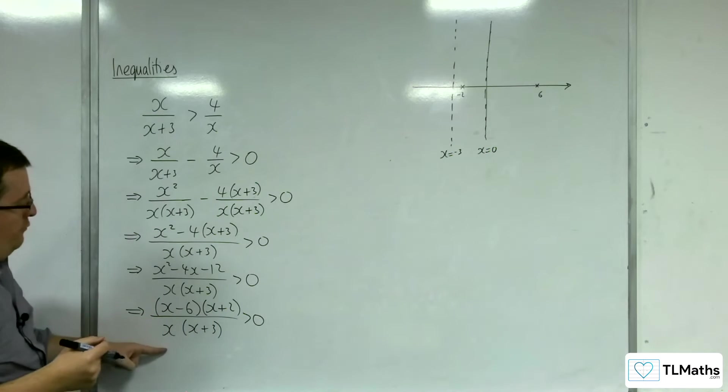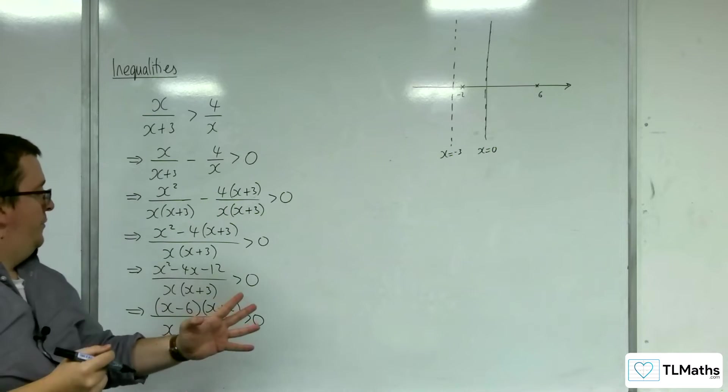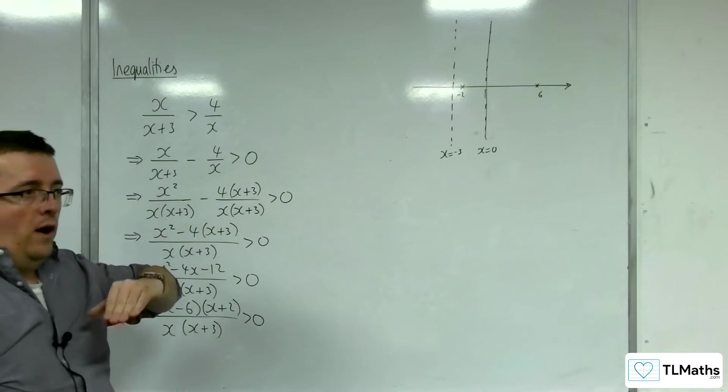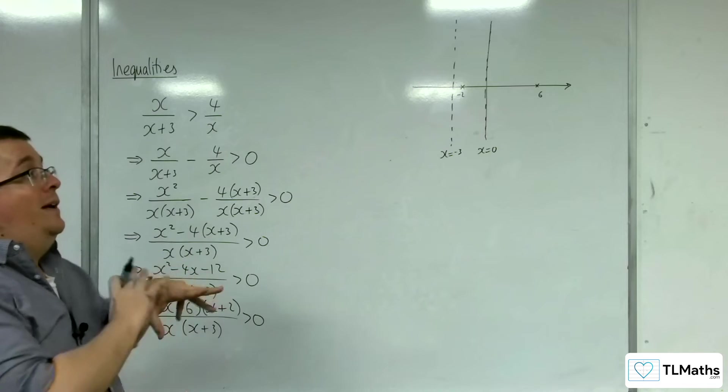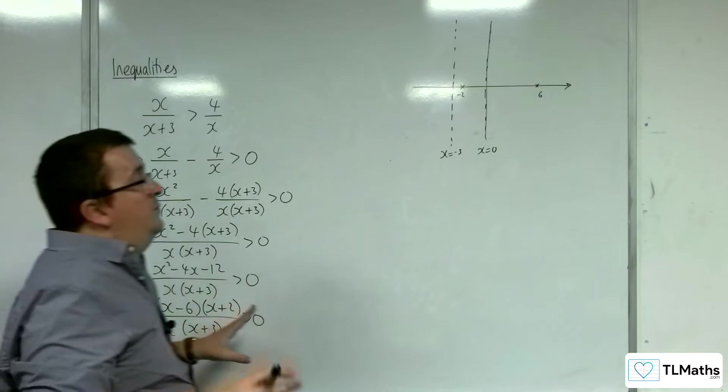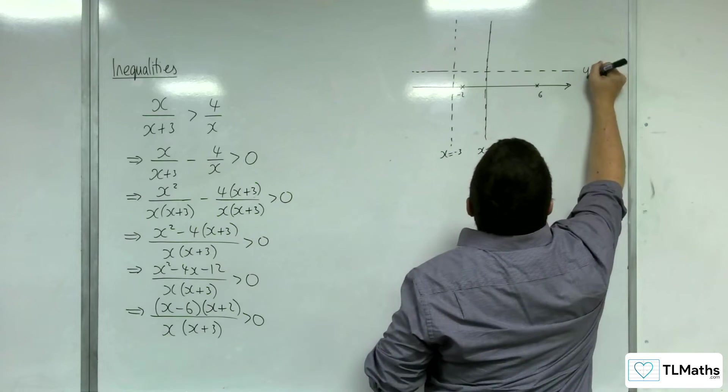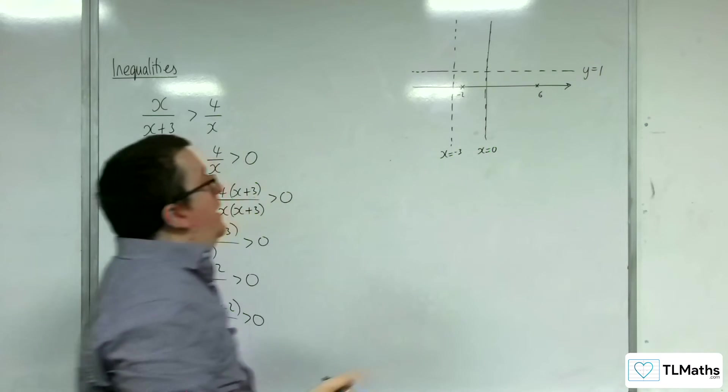Now you've got a quadratic over a quadratic. So you could divide through by x squared top and bottom, and you'd get 1 over 1 plus other stuff. So as x tends to infinity we're going to tend towards 1 as a horizontal asymptote. So I know y equals 1. It's going to do this.